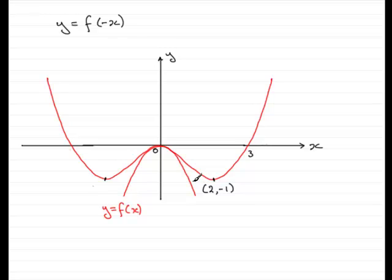We've got to write in the coordinates of the maximum point. Well on the previous graph the maximum point was at the origin so it's going to still remain at the origin.